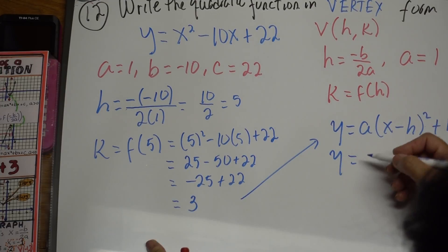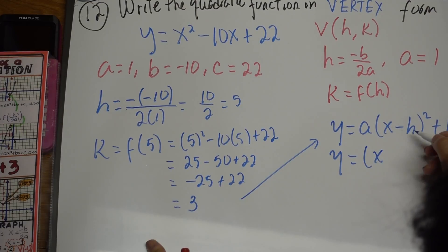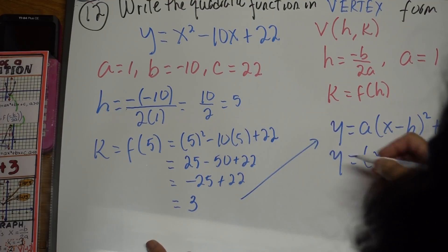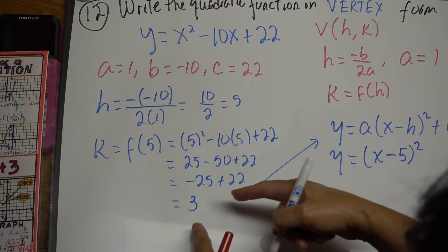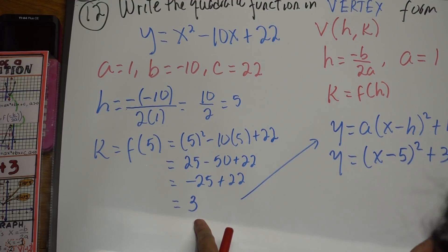y is 1 times, because a is 1, x minus h, which is 5, so x minus 5, squared, and k is negative 3. And this is what you want to find.